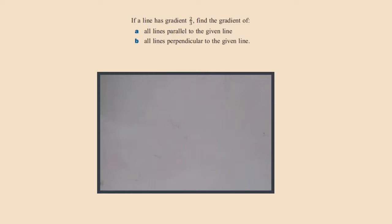If a line has a gradient of two-thirds, then find the gradient of: a) all lines parallel to the given line, and b) all lines perpendicular. Part A: parallel lines. It's simple, as parallel lines have the same gradient.